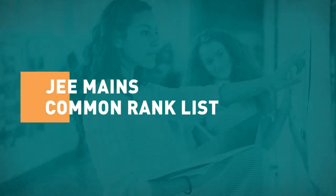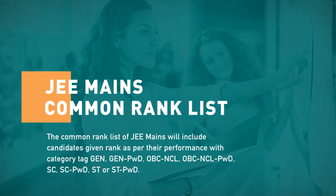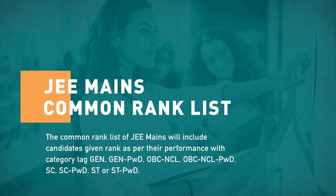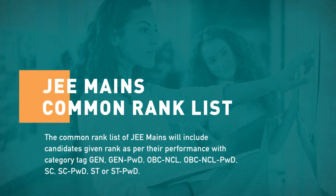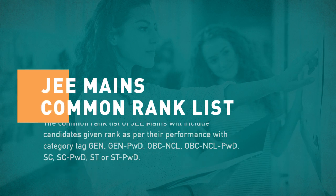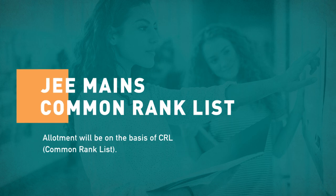Important points of JEE Main Common Rank List: First, the common rank list will include candidates given rank as per their performance with the category tags — General, General-PWD, OBC-NCL, OBC-NCL-PWD, SC, SC-PWD, ST, or ST-PWD. Second, allotment will be on the basis of the common rank list.